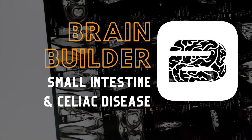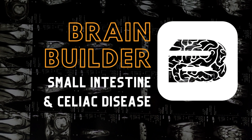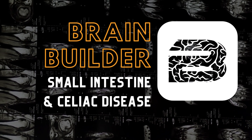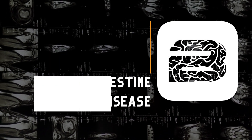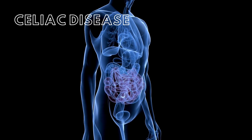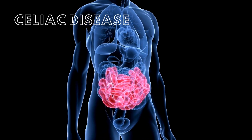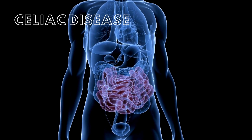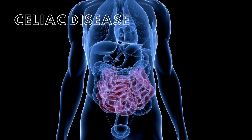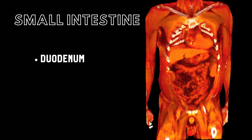Today we are going to look at a BodyViz brain builder about the small intestine and celiac disease. Celiac is a chronic autoimmune disorder, and most of the pathological effects of celiac occur within the small intestine. The small intestine is composed of three sections: the duodenum, the jejunum, and the ileum.